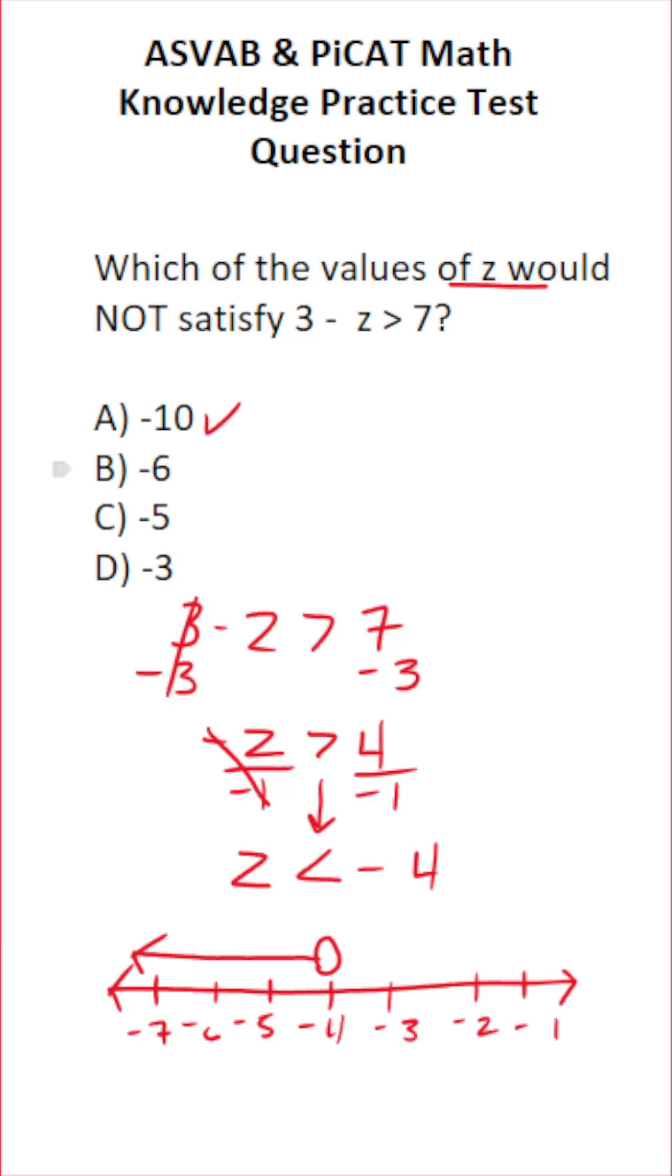So negative 10 works, negative six works, and negative five works. Negative three is not included in our solution set. So the correct answer to this one is D. Negative three does not satisfy this inequality.